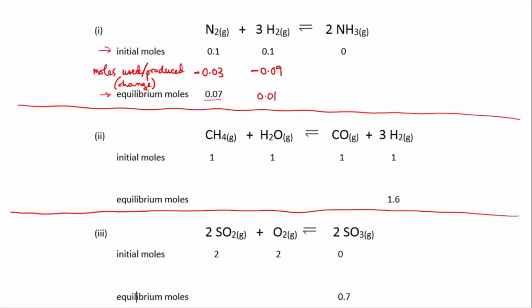On the other side of the reaction we've got the products. Now going back to the stoichiometry of the reaction, you can see there's one mole of nitrogen ends up giving two moles of ammonia, so that's a one to two ratio. If we used 0.03 moles of nitrogen, then we must have produced twice as much ammonia.